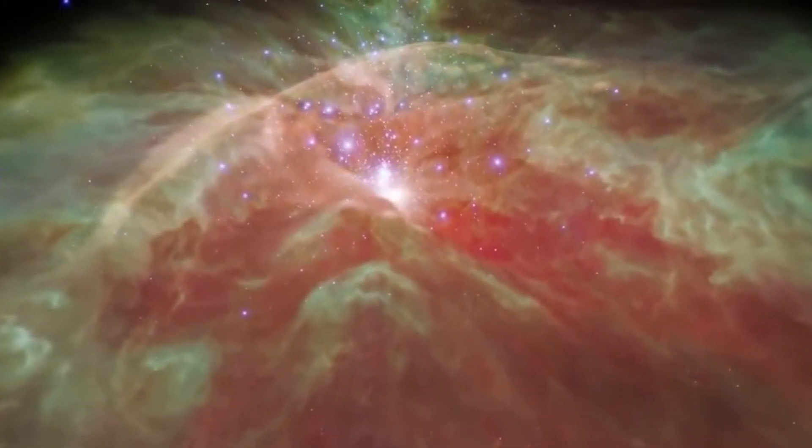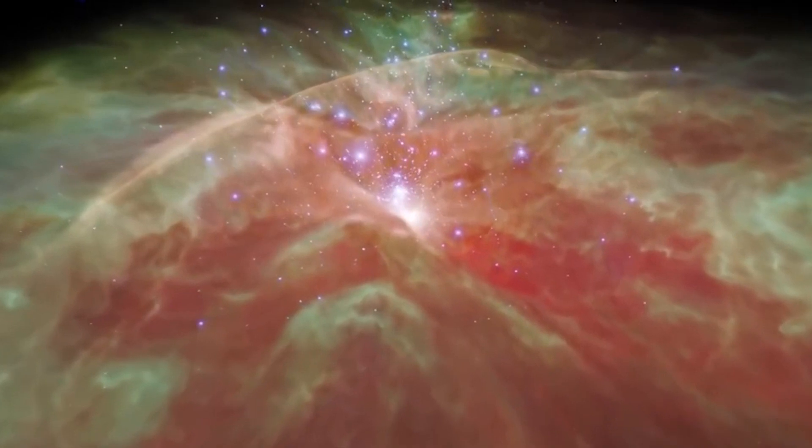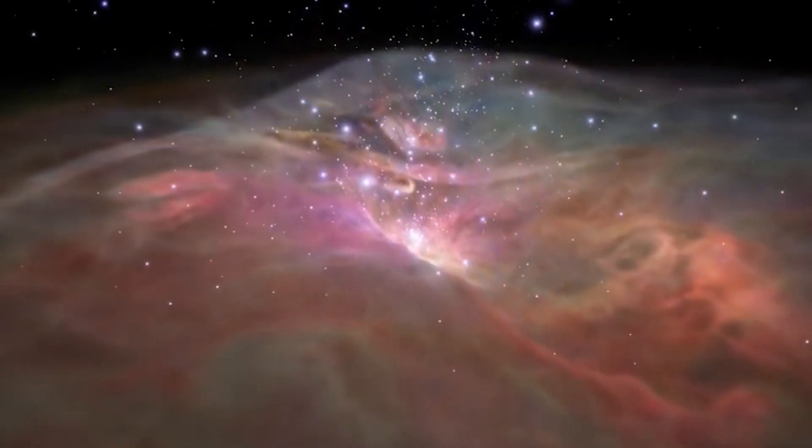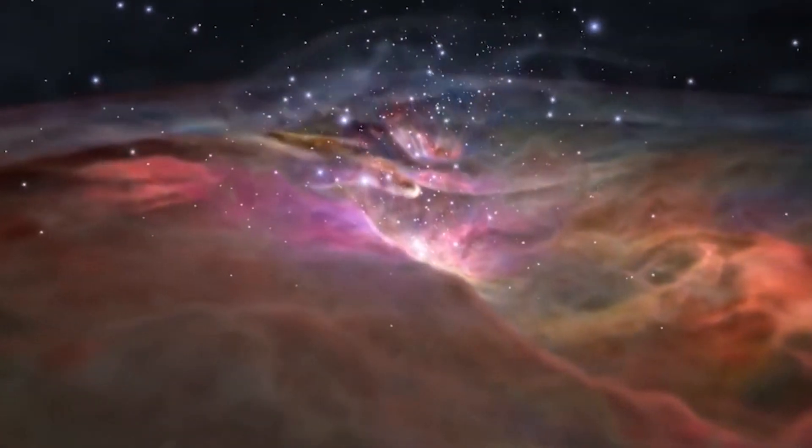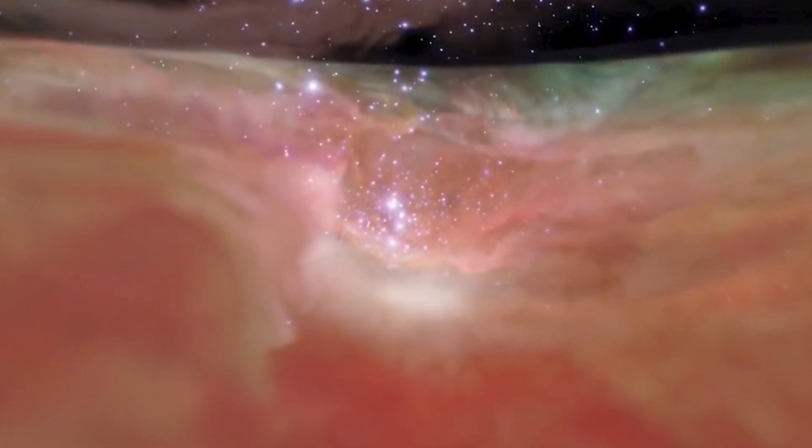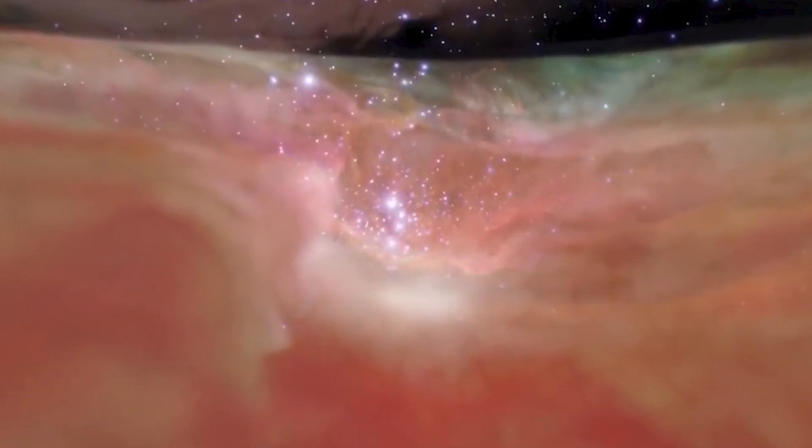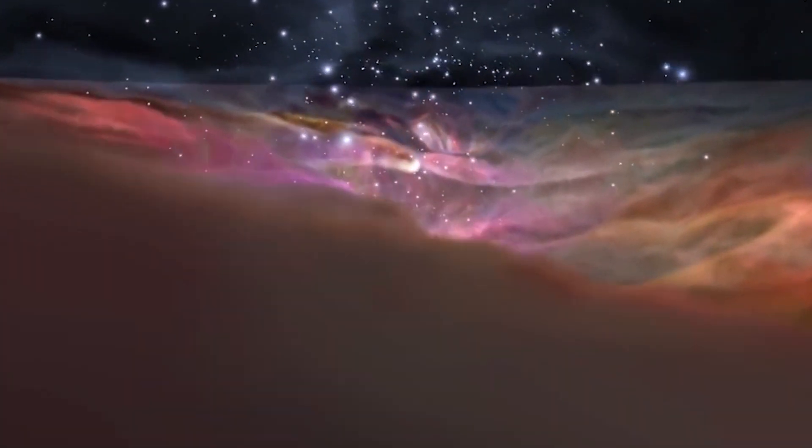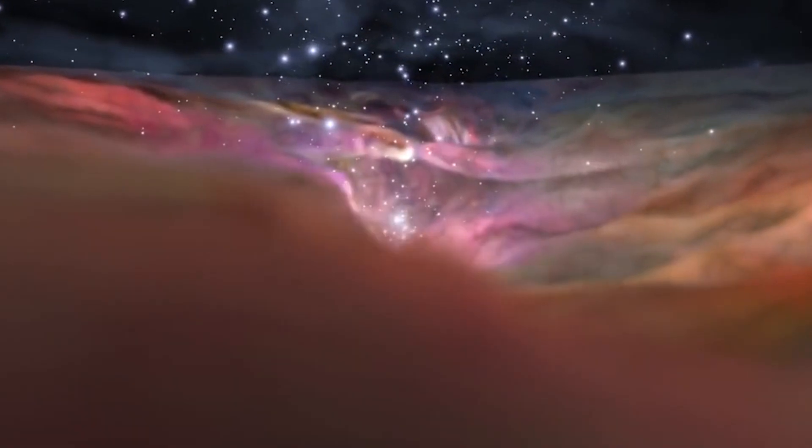Upon colliding with the denser sectors of the nebula, these winds get redirected, skirting around them akin to water circumventing a stone in a stream. This dynamic lends the clumps their distinctive tadpole appearance, complete with tails that, intriguingly, consist of material being swept away from the denser leading regions.